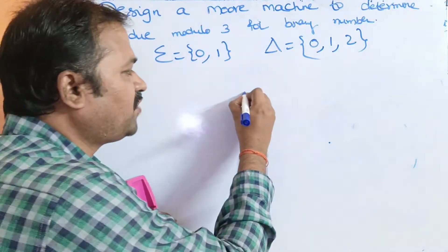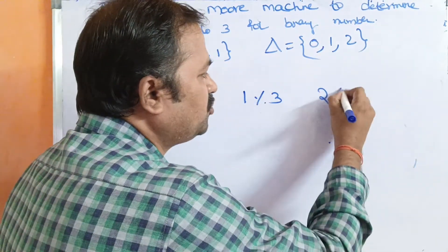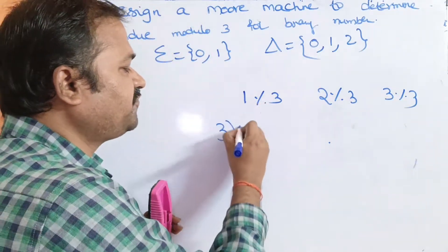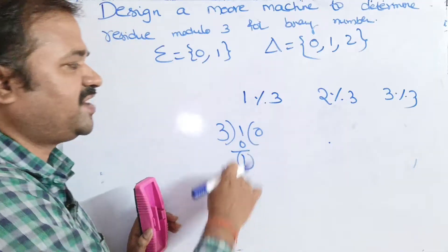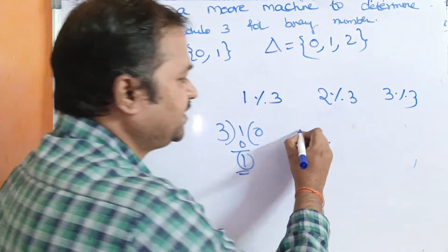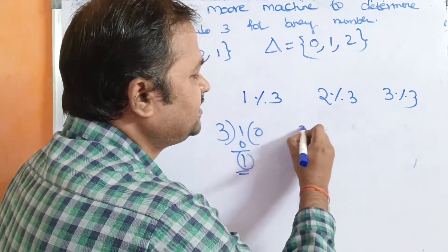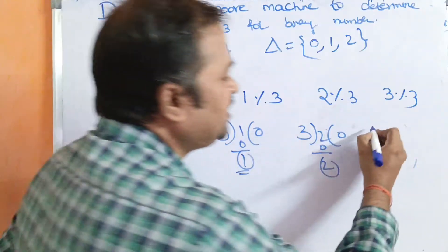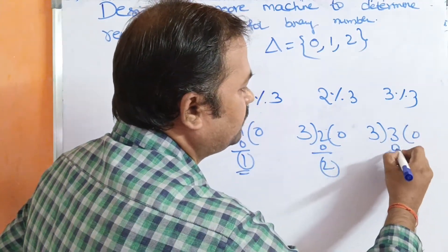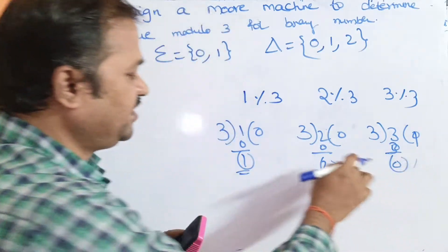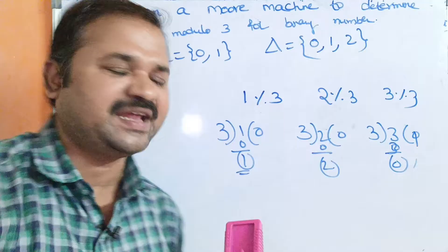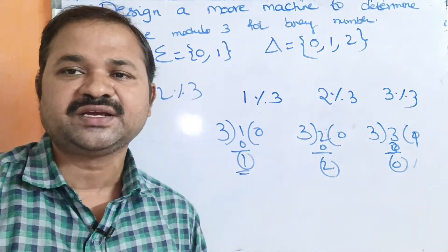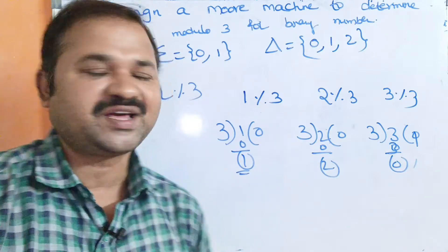For example: 1 modulo 3 equals 1 (remainder). 2 modulo 3 equals 2. 3 modulo 3 equals 0. So we will always get either 0, 1, or 2 as the remainder. If we take 72: 72 modulo 3 — since 3 times 24 equals 72 — the result is 0. This confirms that delta equals {0, 1, 2}.